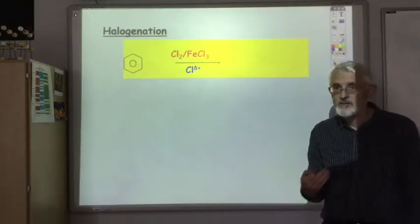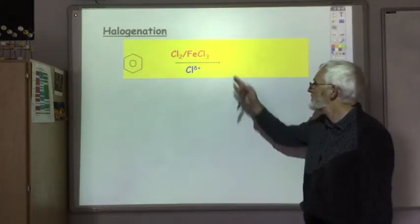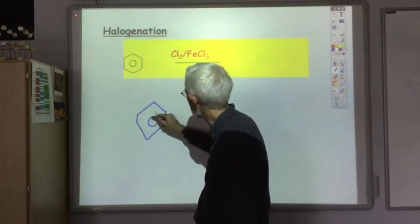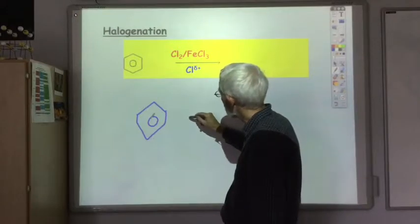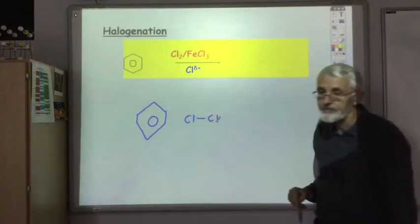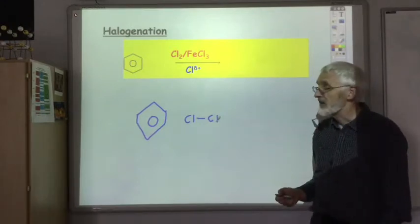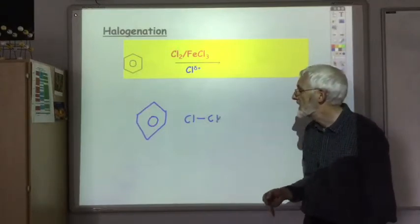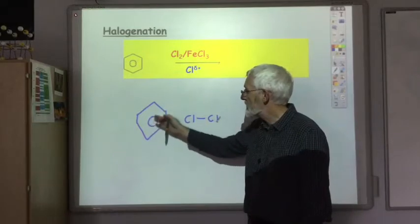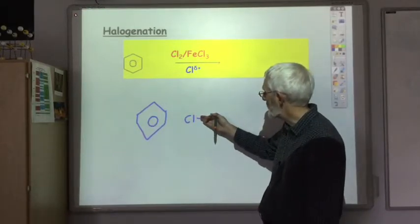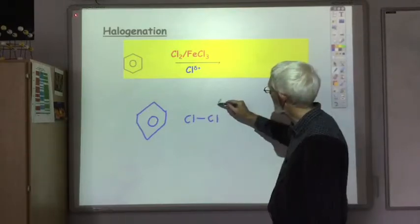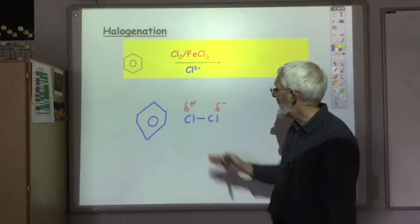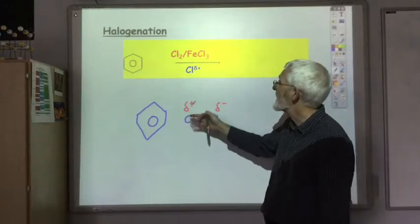The electrophile in this case is the slightly positive end of a chlorine molecule. Of course, a chlorine molecule is perfectly non-polar, so how does this arise? Here's my benzene ring, very rich in electrons. As a non-polar chlorine molecule approaches it, you get this induced polarity. We came across this in the halogenation of alkenes. As it approaches this electron-rich area, the electrons in the covalent bond are shoved on towards the far away chlorine, which becomes slightly negative. So this chlorine becomes slightly positive and becomes the electrophile for the electrophilic substitution.